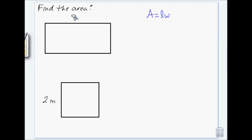Eight meters by four meters — the area is going to be eight times four, so it's 32 meters squared.